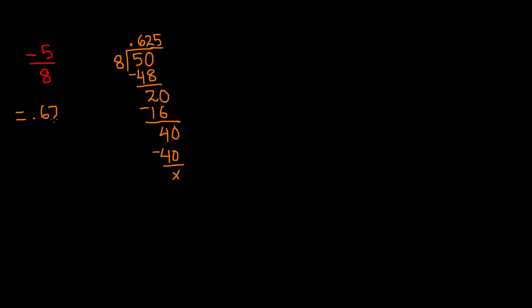0.625 is a terminating decimal. That means it does not repeat, so this also proves that negative 5 eighths is a rational number. Now keep in mind that we left out the negative sign in the beginning when we were dividing. We need to add that negative sign back into our answer. So if it was negative 5 divided by 8, our answer is going to be negative 0.625. So this is our final answer.